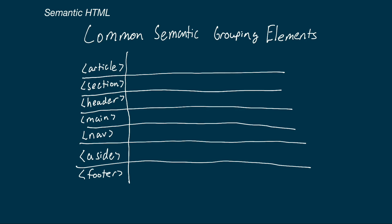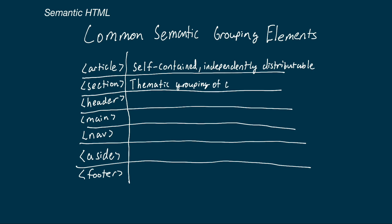Here are some of the most common semantic grouping tags. First, the article tag — for self-contained content that is independently distributable. Content you could take and put somewhere else on the internet and it would still make sense, like a news article. Next, the section tag — very similar to article in that it is for a thematic grouping of content, but the primary difference is that a section is not independently distributable. Sometimes sections are subsections of an article nested inside it; other times they're independent sections of a website that are each thematic groups of content but cannot exist without the other sections.